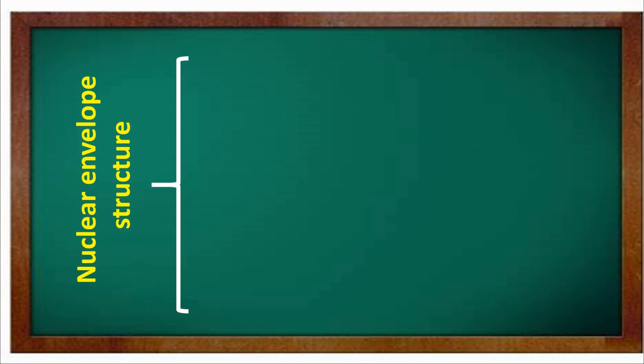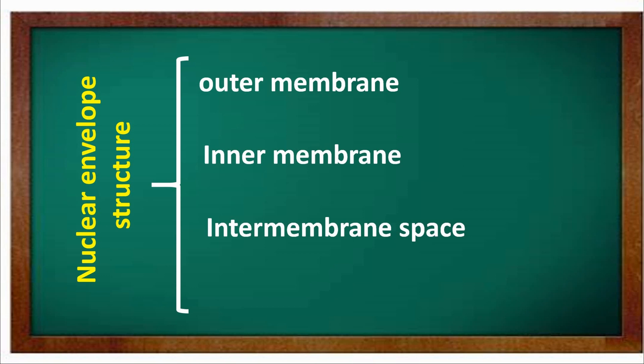Nuclear envelope structure. Nuclear envelope has four parts in its structure: number one, outer membrane; number two, inner membrane; number three, intermembrane space; and number four, nuclear pores.